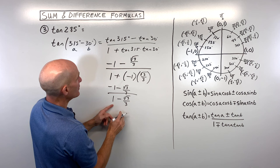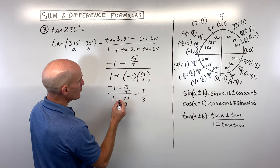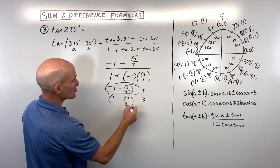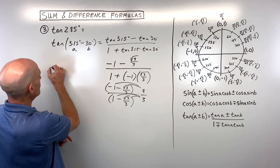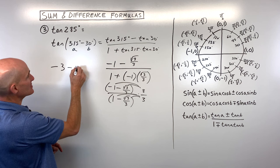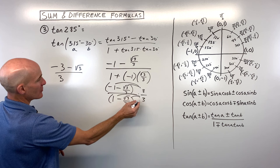We can multiply the numerator and denominator by 3 to clear the complex fraction. Distributing the 3: in the numerator, −1 × 3 = −3, and the 3's cancel leaving −√3. In the denominator, we get 3, and the 3's cancel leaving −√3. So this simplifies to (−3 − √3) / (3 − √3).